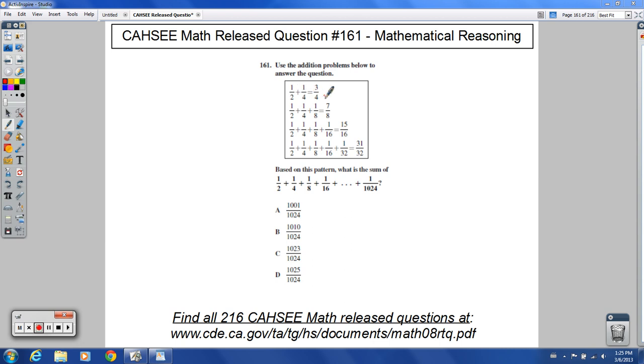1 half plus 1 fourth is 3 fourths. 1 half plus 1 fourth plus 1 eighth is 7 eighths. Notice the pattern here. It's the powers of 2 on the bottom.